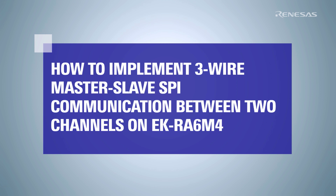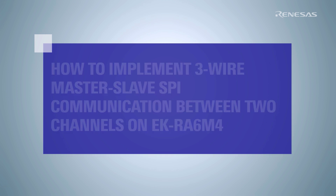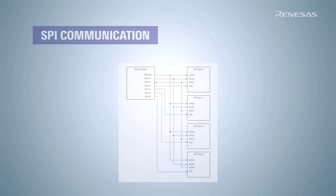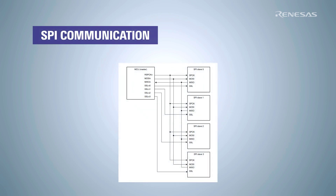In this video, we will be implementing a 3-wire SPI communication between two EK-RE6 M4 channels. The Serial Peripheral Interface, or SPI, is a communication protocol where a master MCU communicates with several peripheral or slave MCUs. The communication may be bi-directional but needs to be initiated by the master.